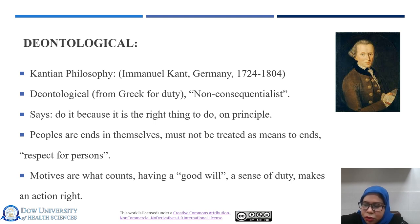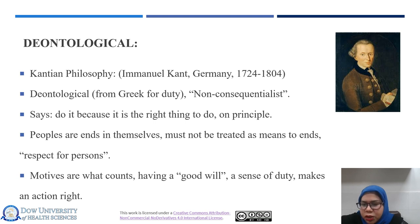According to deontologists, moral duties and obligations should guide our behavior, and these duties are derived from universal rules or principles. For example, the principle of respect for autonomy requires that we respect an individual's right to make decisions for themselves. This is a deontological principle that is frequently applied in bioethics.